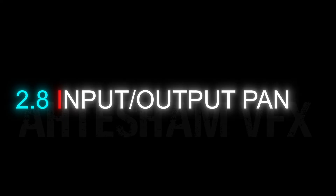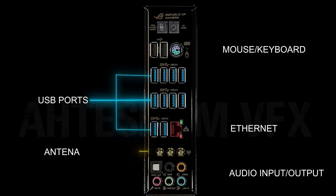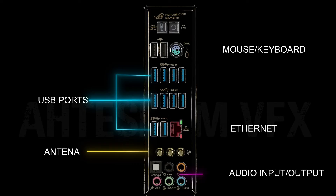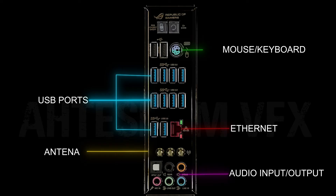Heading towards input and output panels — in most motherboards we have USB ports, antenna, audio input/output, Ethernet input, and mouse and keyboard inputs. That's it for computer hardware.